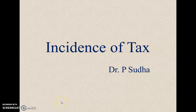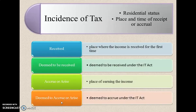Hello viewers, in this video let us discuss the chapter incidence of tax. Incidence of tax is nothing but what are all the incomes that will be added or charged to tax while calculating total income, and what income will not be charged to total income. This incidence of tax is determined on the basis of the residential status of that assessee and the place and time of receipt or accrual.